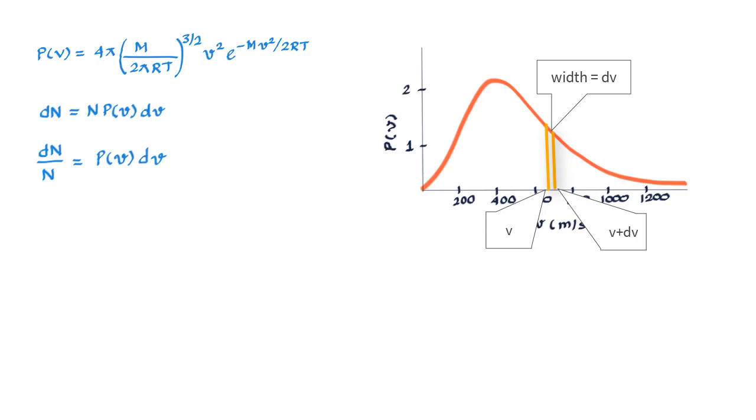So we can see that fraction of such molecules, that is molecules in the speed interval v and v plus dv, is equal to the area of the strip that is height P(v) into the width dv.